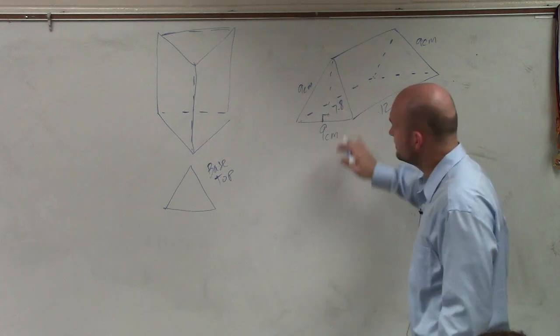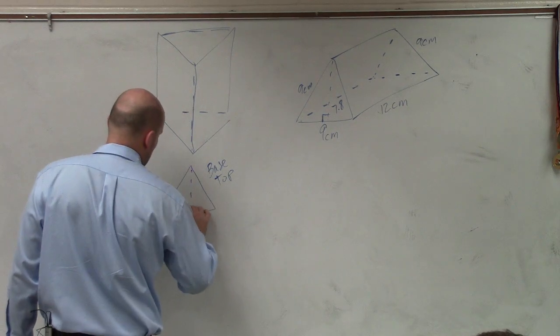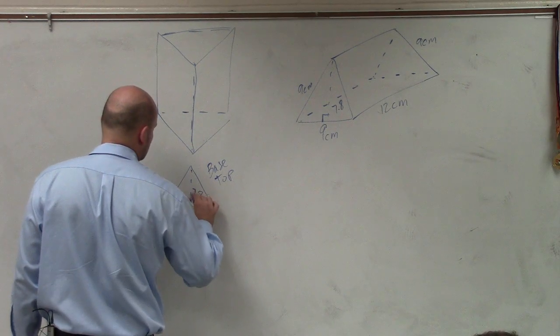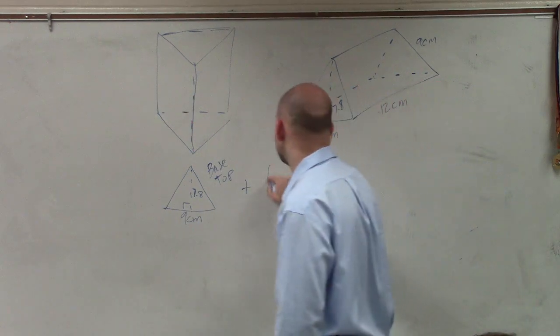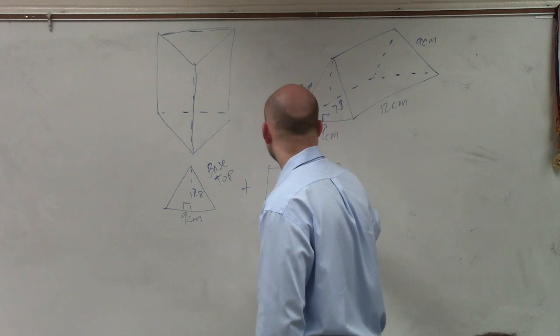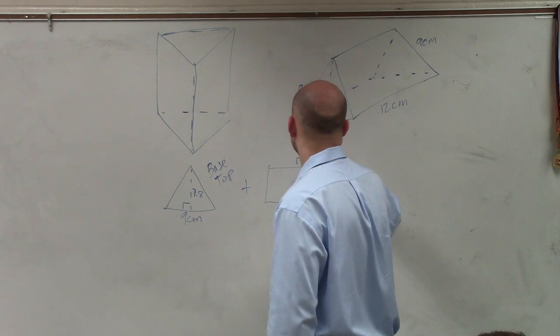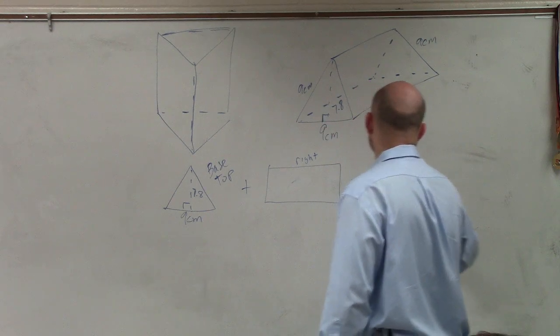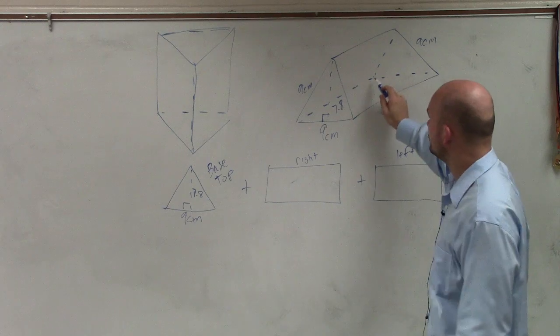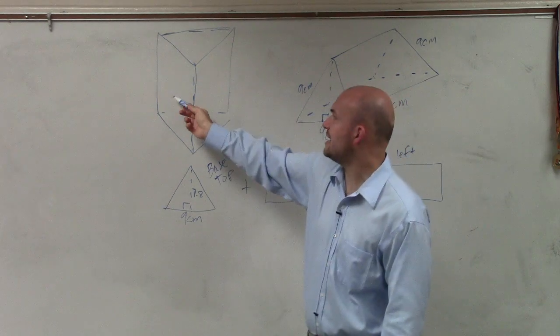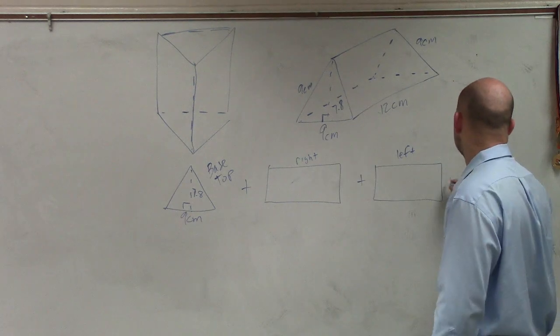And the base and the top is 9 centimeters by 7.8. And I'm going to add that to each and every side. And each and every side is a rectangle. I'll call this the right side plus the left side. So if you did right and left, right, left, and then this would be the back, which would be right here, plus the back.